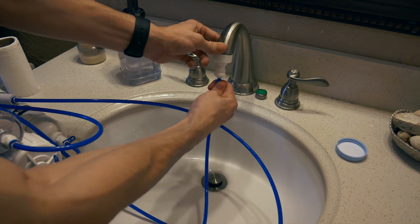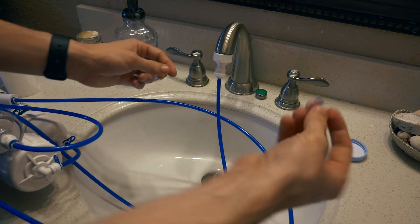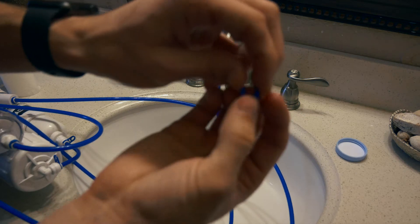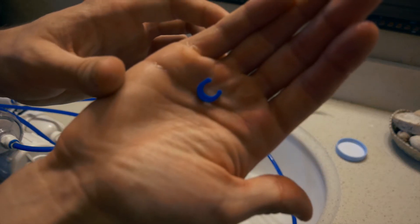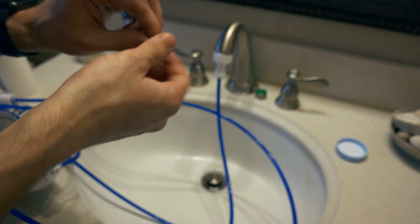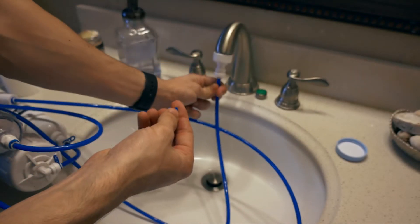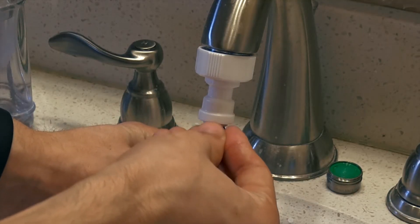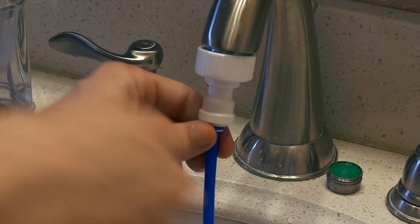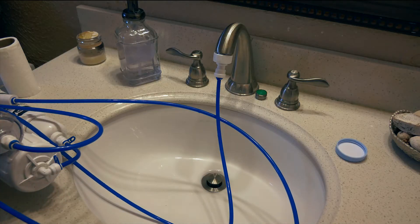And then you can go ahead and connect the tubing. Just kind of push it up. And then to get this seal on here, the little ring, you just have to pull the tubing back a little bit. And it opens it up so you can stick it right on there. And now you're connected to your sink.